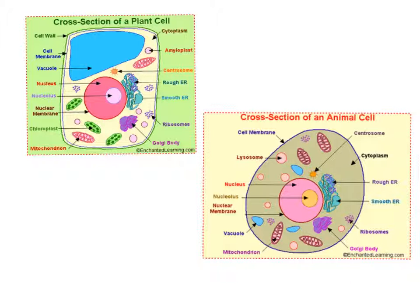The next definition is organism. This is going to be an animal, a plant, or a single-celled life form. An example of a single-celled life form would be a bacterium.